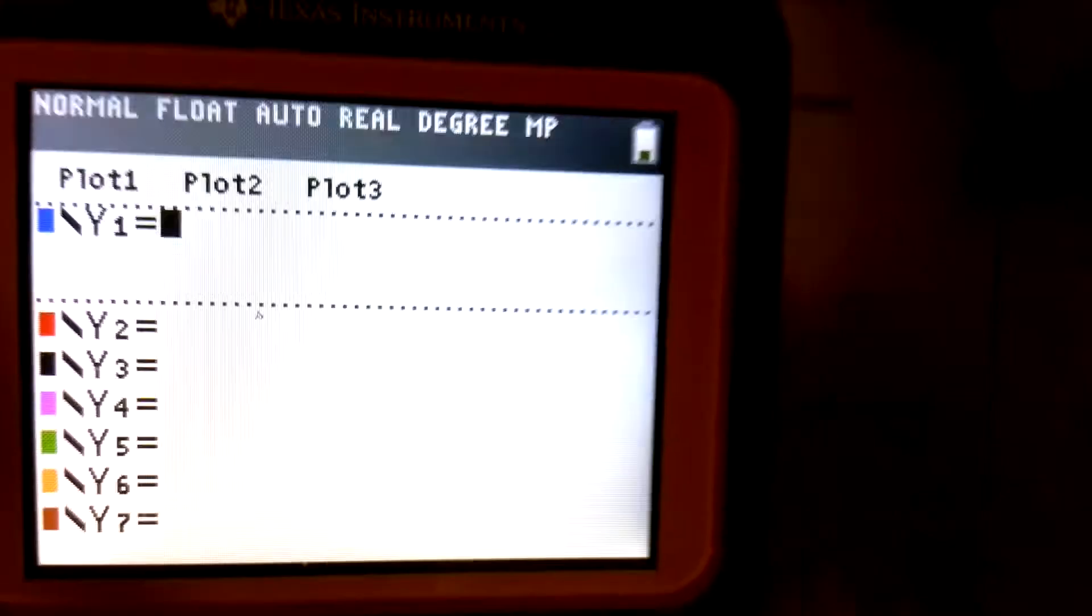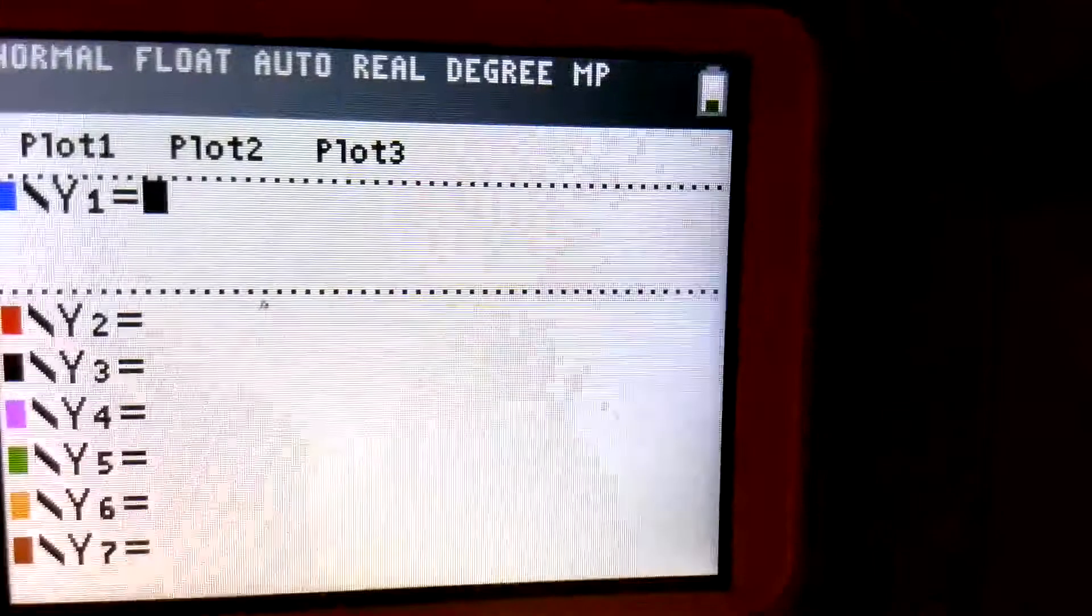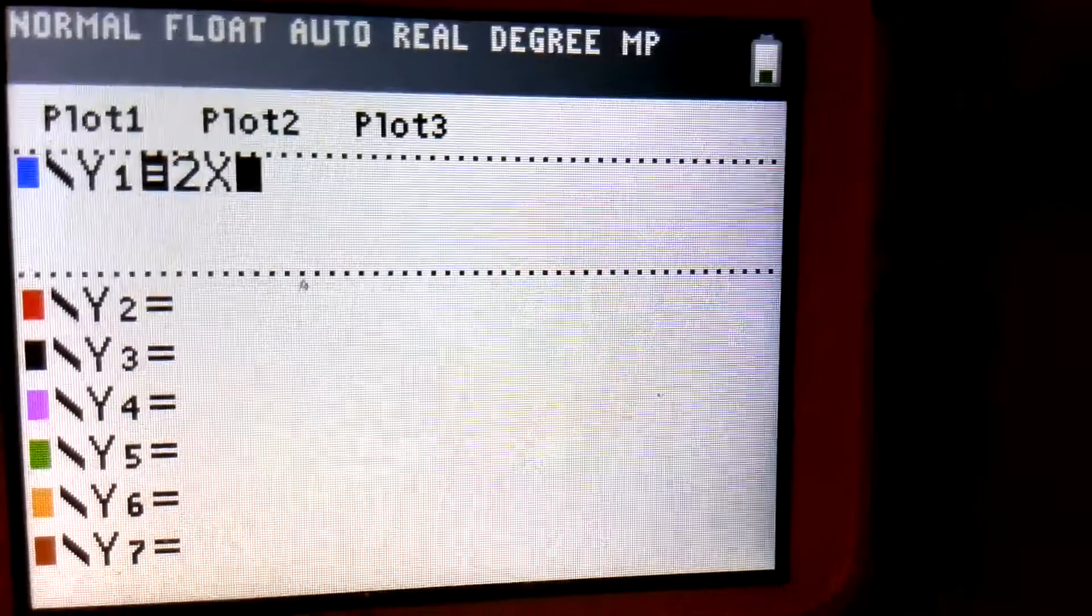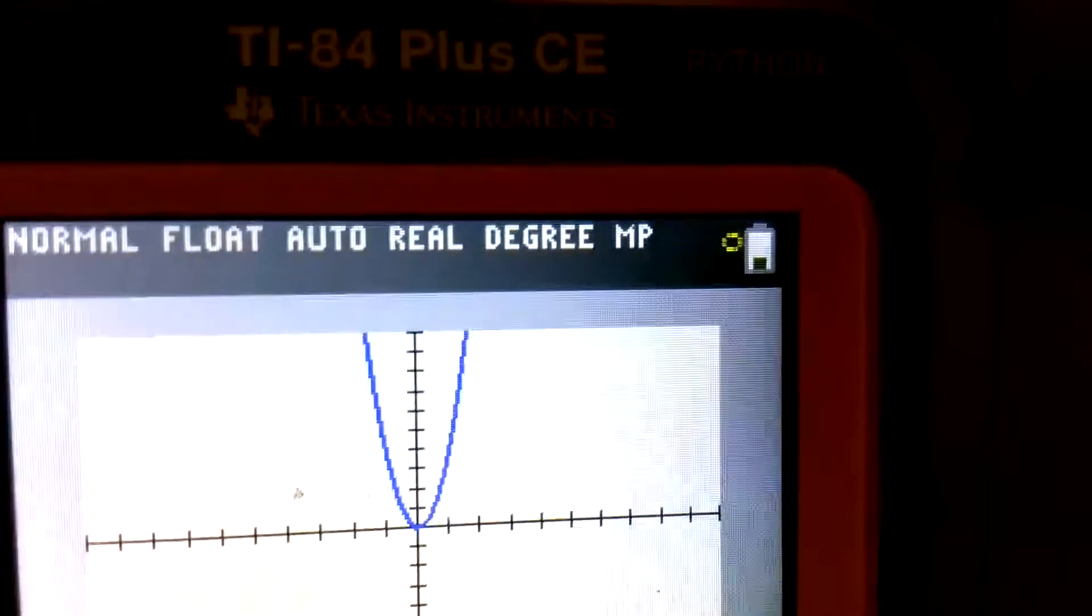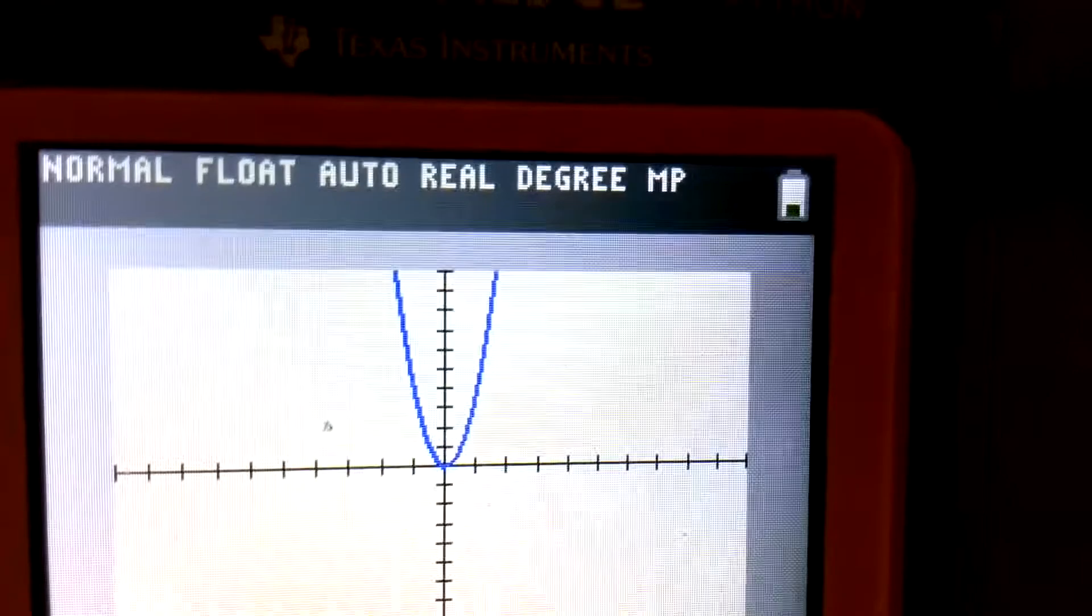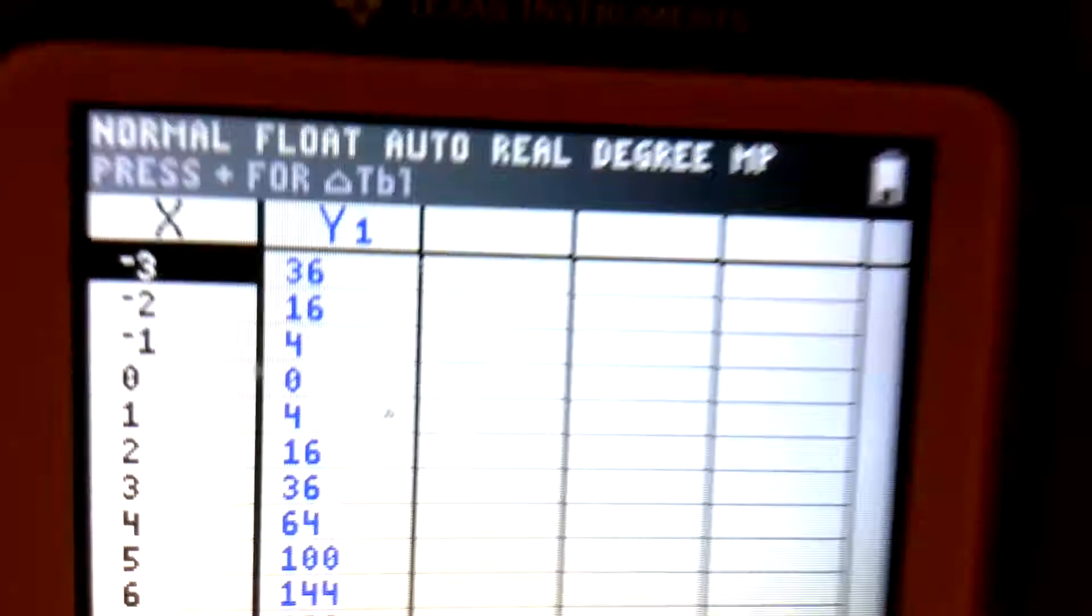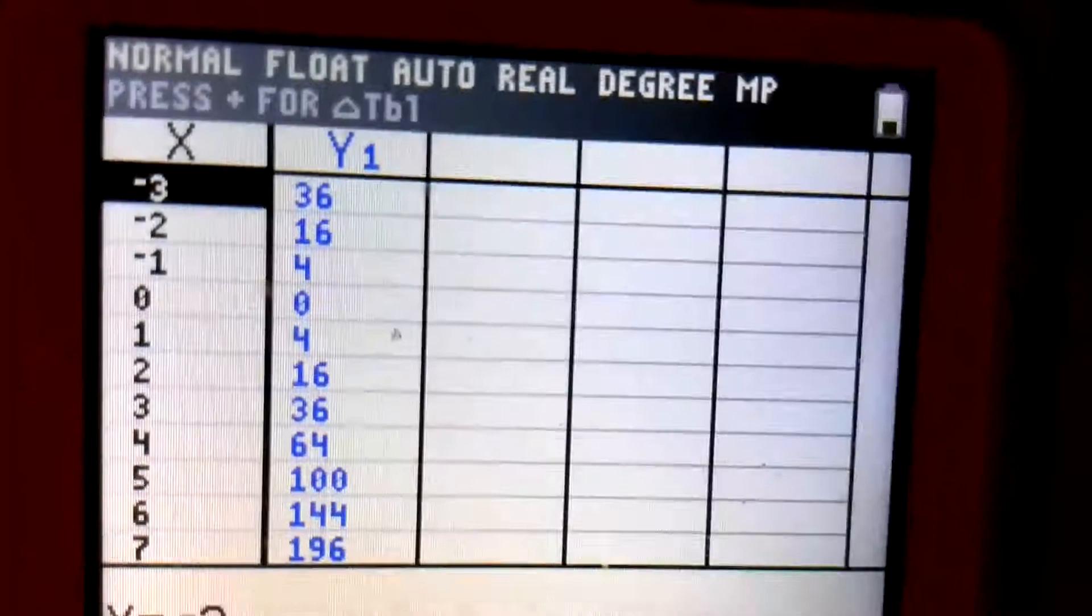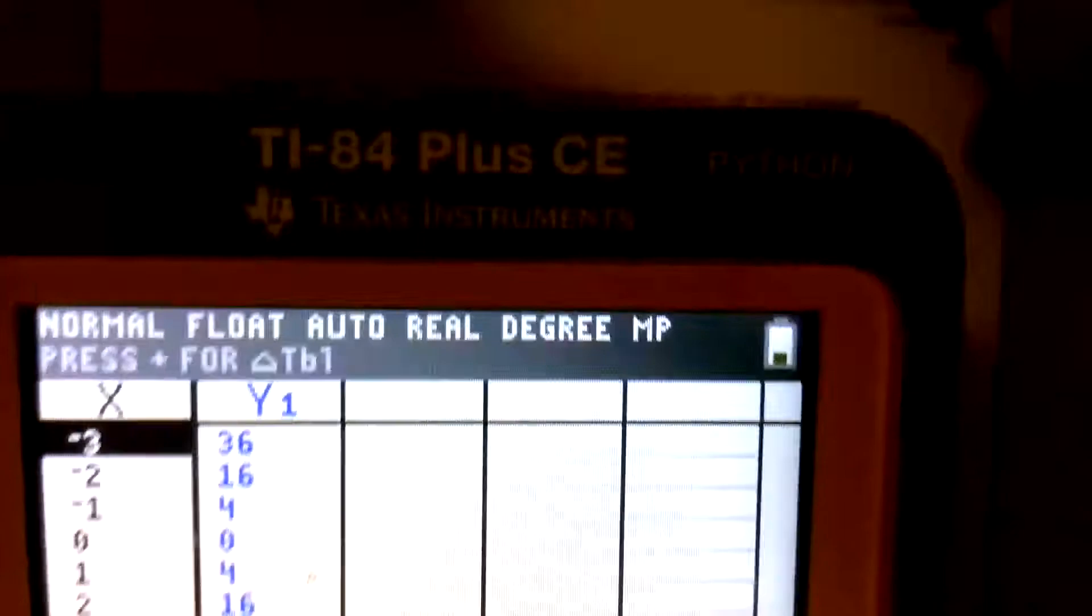All right. We'll go to the y. We'll get rid of that. And now we're going to put 2x squared. Okay? So 2x. Oops. Hold on. I've got my parentheses. Parentheses. 2x. Parentheses. Second power. Graph. See how tight it got? That's because we have the big 2 in the front. Remember, it gets narrow. If there's a fraction, it's going to get wide. And we can go to second function graph, and we get our numbers. So on our chart, we can put in 36, 16, 4, 0, 4, 16, 36.